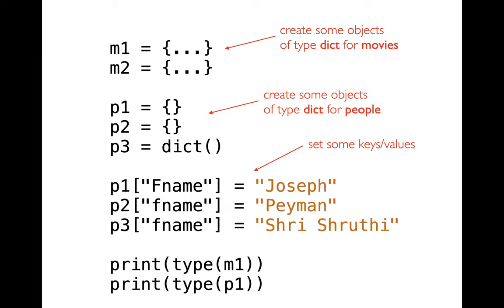I could also use dictionaries to represent people. Here I'm creating three people and adding keys and values afterwards — setting a first name for each. These happen to be your TAs. There's a special syntax for creating dictionaries: the two curly braces. Another way is to say the type name — type dict — and then parentheses. That's actually what we're going to be seeing more commonly going forward. You only get special syntax like curly braces for built-in Python types.